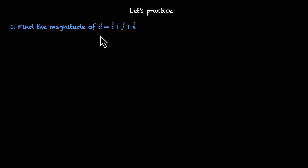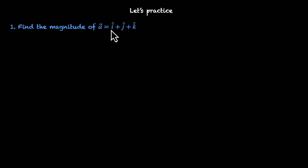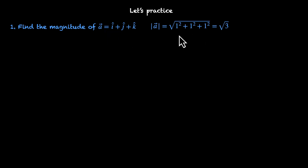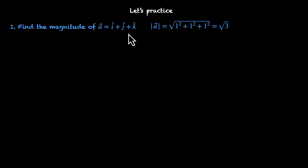Let's practice. Find the magnitude of vector A = i-cap + j-cap + k-cap. It might look like a unit vector since all components are 1, but let's check. The magnitude is √(1² + 1² + 1²) = √3. So the magnitude is not 1 — this is not a unit vector.